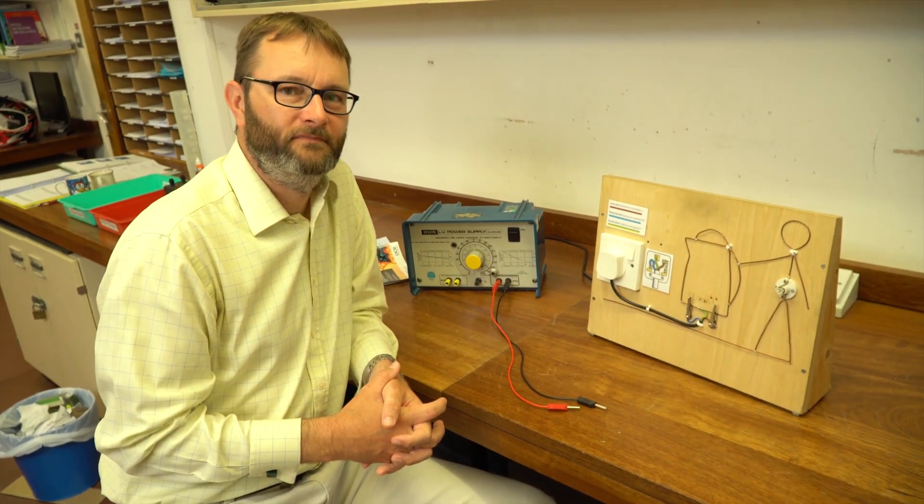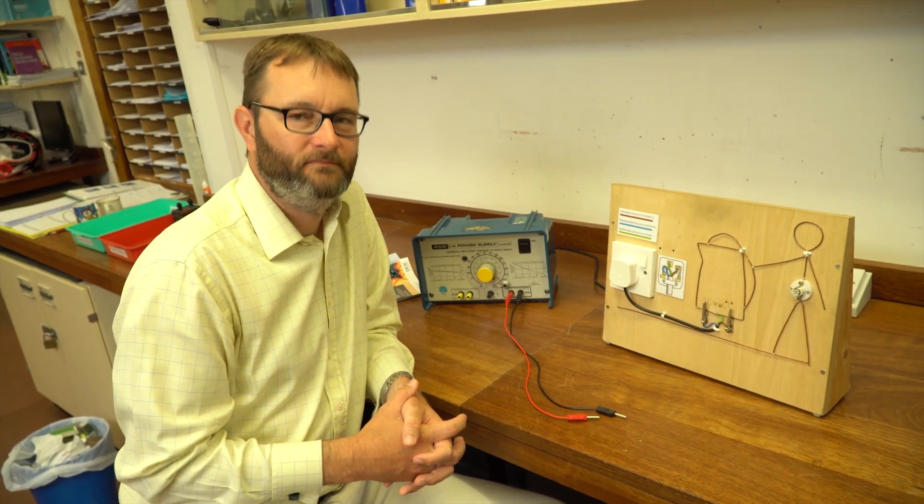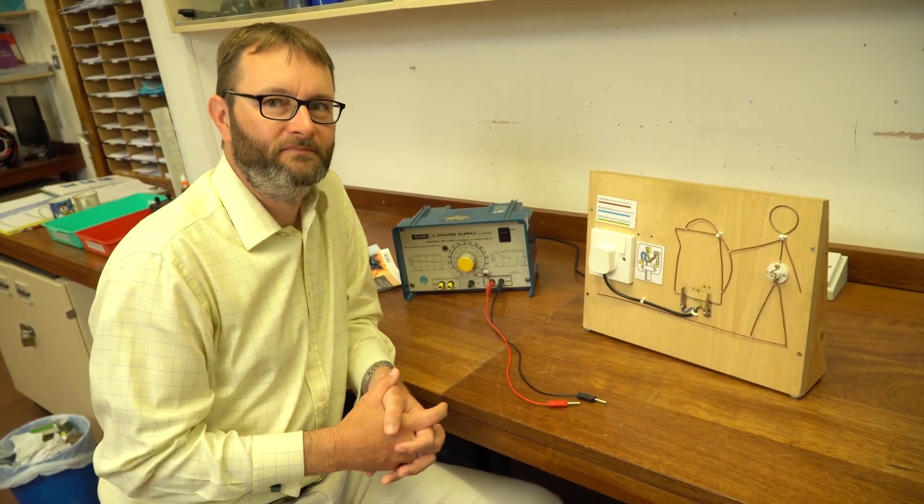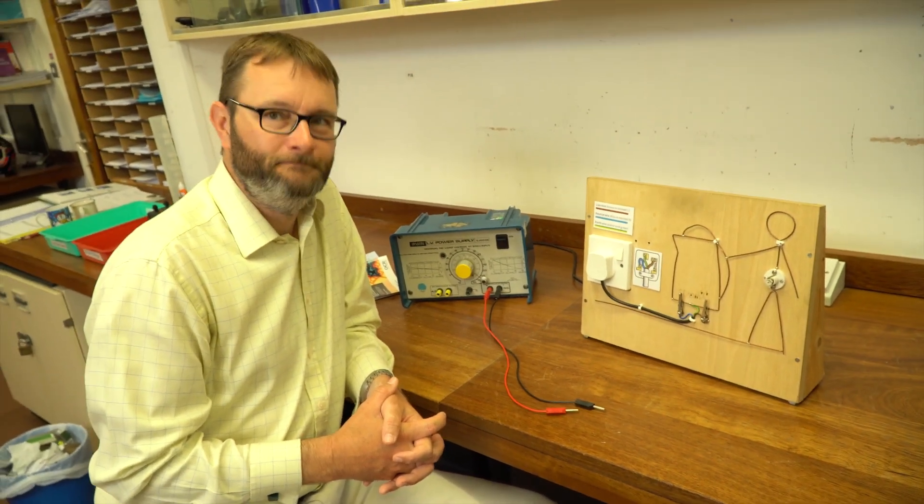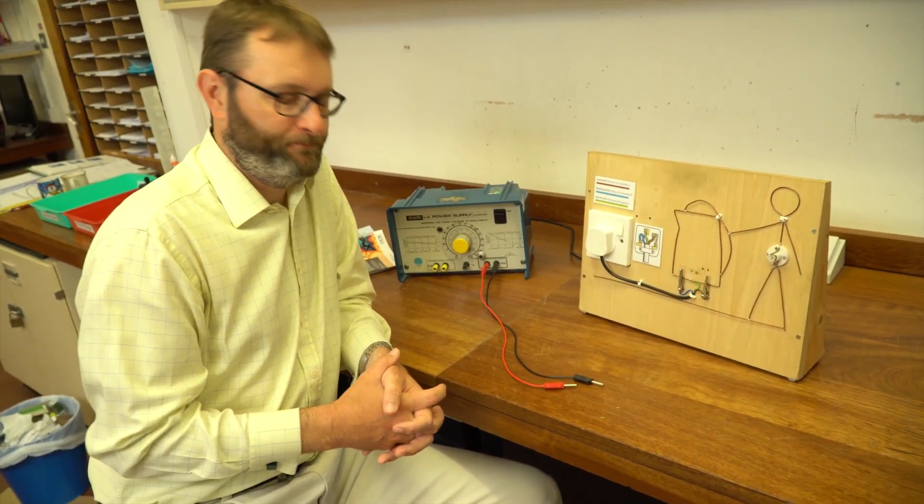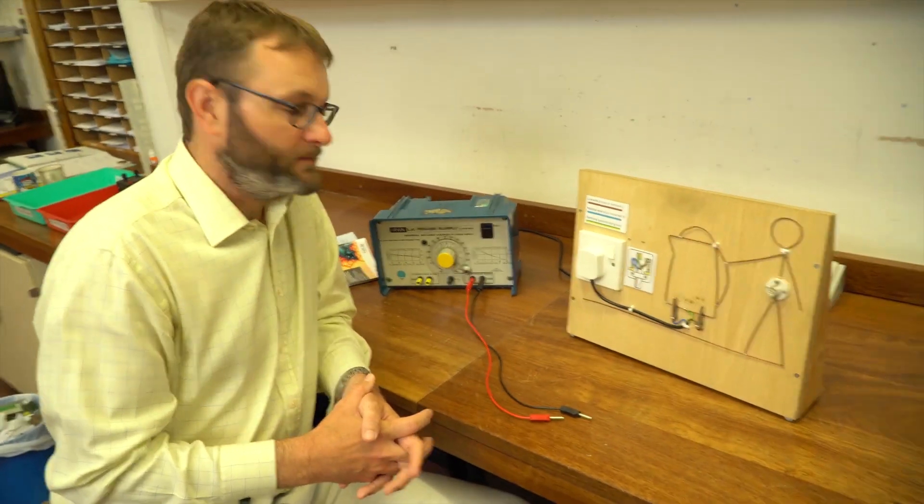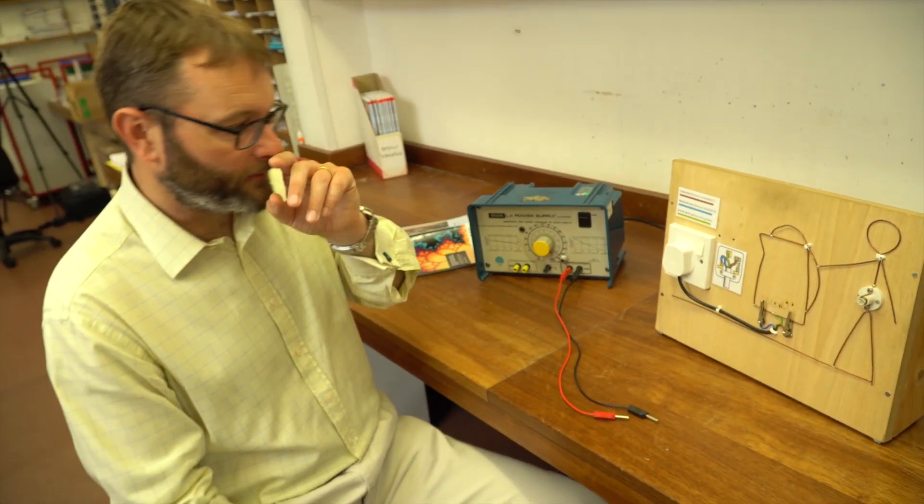Something that students find difficult, especially when we go on to looking at AC circuits, is normally you've got a couple of wires, maybe a positive and a negative, but now we have a neutral and an earth and a live. I think for a lot of students they just don't understand why there's an earth wire in the circuit.